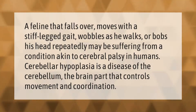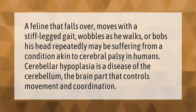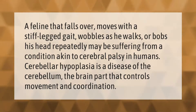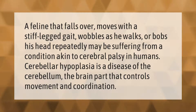A feline that falls over, moves with a stiff-legged gait, wobbles as he walks, or bobs his head repeatedly may be suffering from a condition akin to cerebral palsy in humans. Cerebellar hypoplasia is a disease of the cerebellum, the brain part that controls movement and coordination.